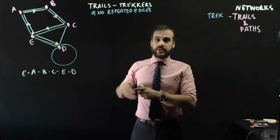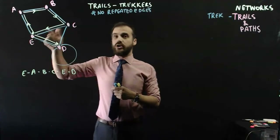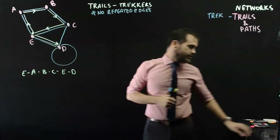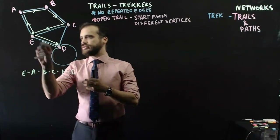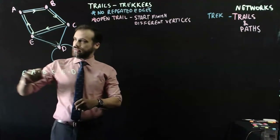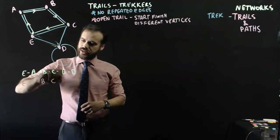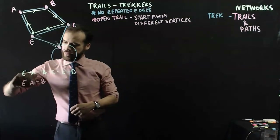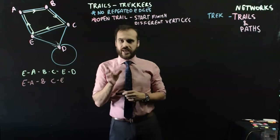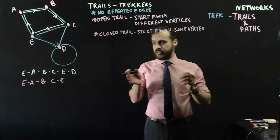Trails are walks, and trails can also be open or closed. This is an open trail because it starts and finishes on different vertices. If we shorten the trail slightly and get rid of that last arrow, we now have the trail E to A to B to C and back to E — that is a closed trail. No repeated edges, and it starts and finishes at the same vertex.